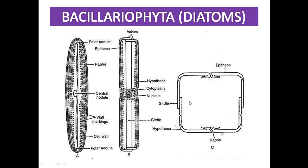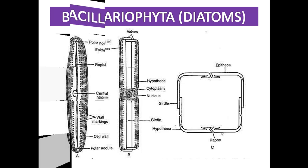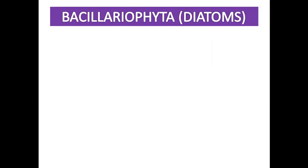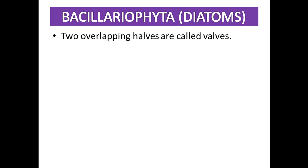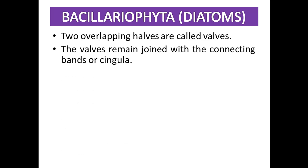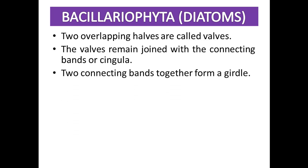The two overlapping halves are called valves. The valves remain joined by connecting bands called the cingulum. Two connecting bands together form the girdle, as seen in the diagram.